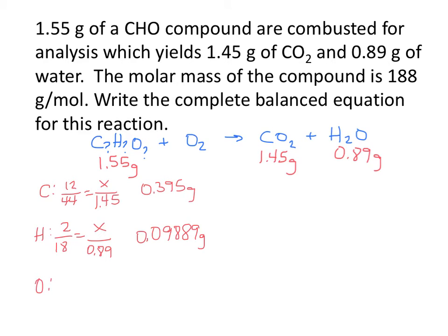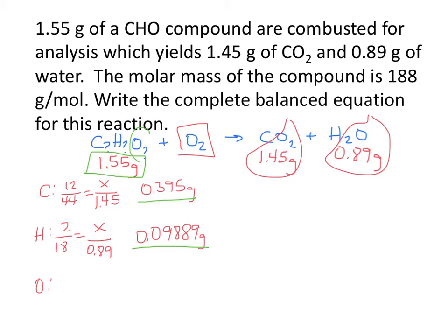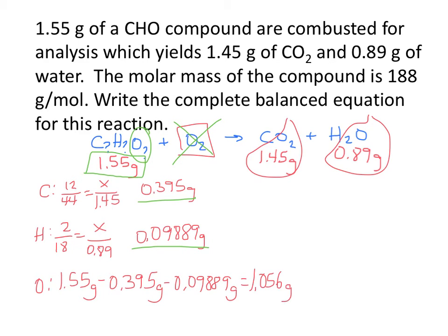For oxygen, this is tricky. We cannot find just the mass of oxygen in CO2 and in H2O and add them together, because that discounts the oxygen that came from the original compound. Instead, we take the original 1.55 grams and subtract out the carbon and subtract out the hydrogen — what's left is the oxygen that came from this compound, leaving out the oxygen that came from the air. So 1.55 minus 0.395 minus 0.09889 gives a mass of 1.056 grams for oxygen.